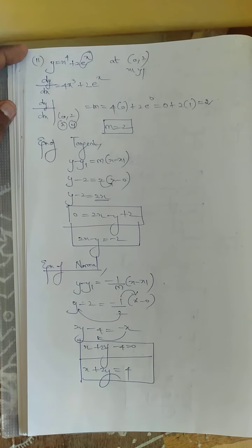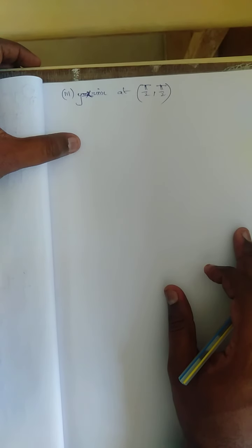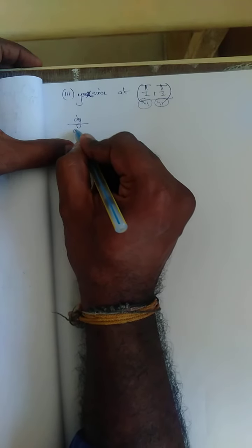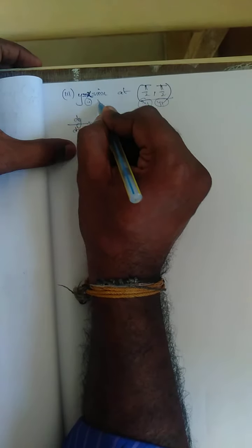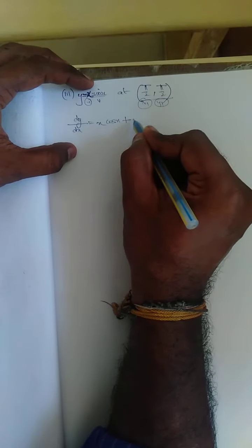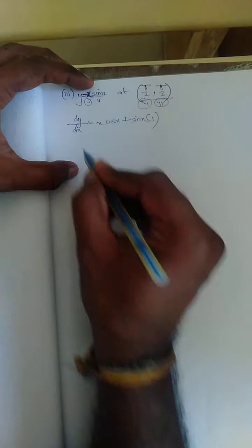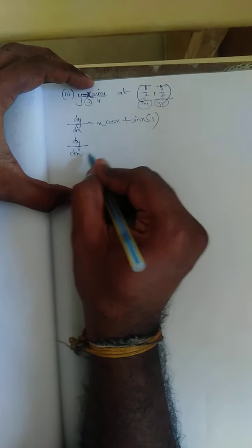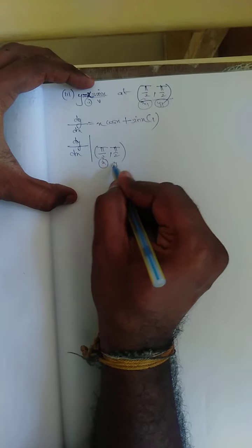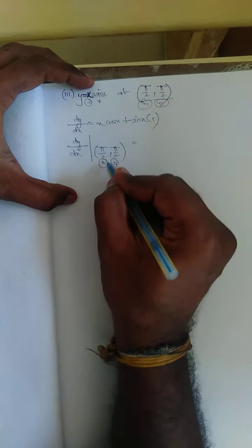Third subdivision: y = x·sinx at (π/2, π/2). The given point x₁ = π/2, y₁ = π/2 — keep it for the final equation. Differentiate using the uv method: dy/dx = x·(cos x) + sin x·(1). Apply at x = π/2: (π/2)·cos(π/2) plus sin(π/2).